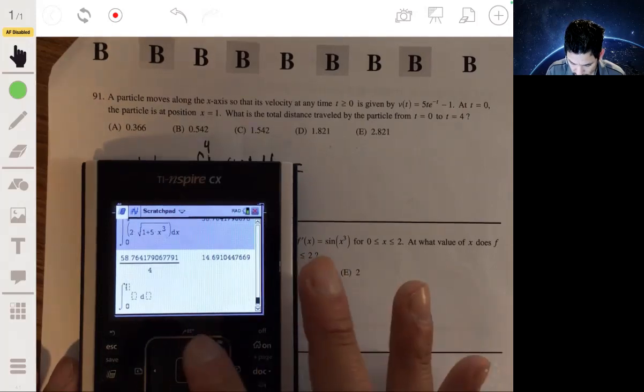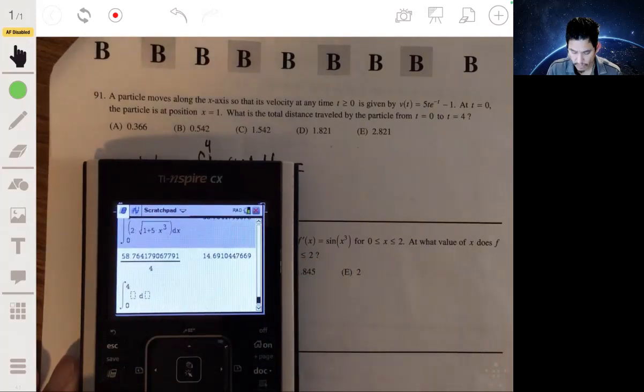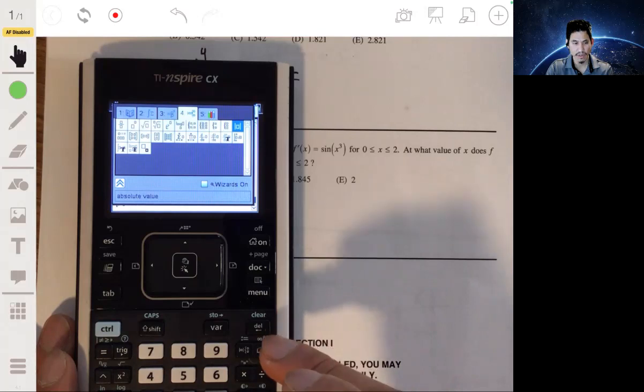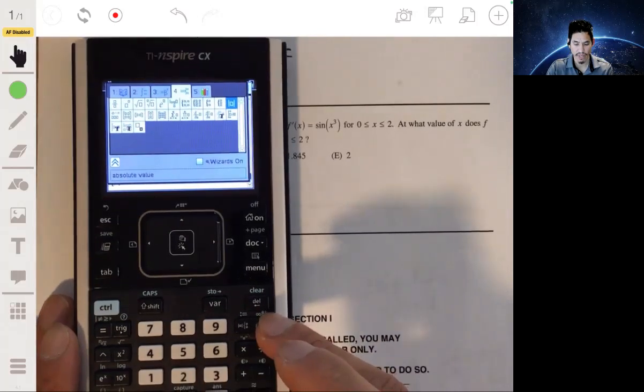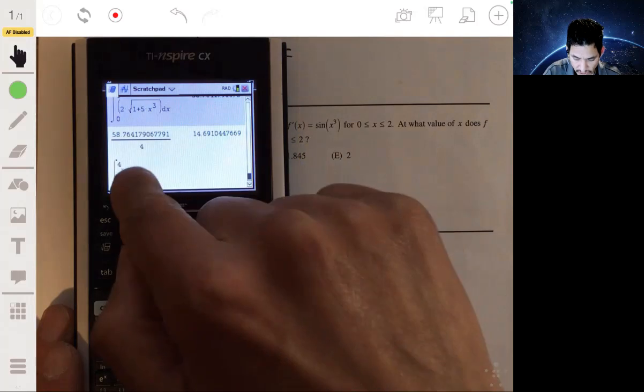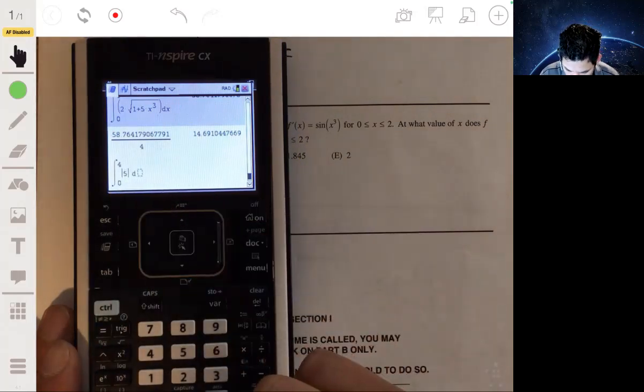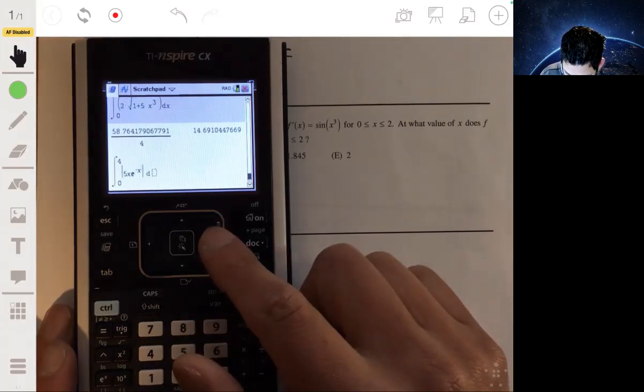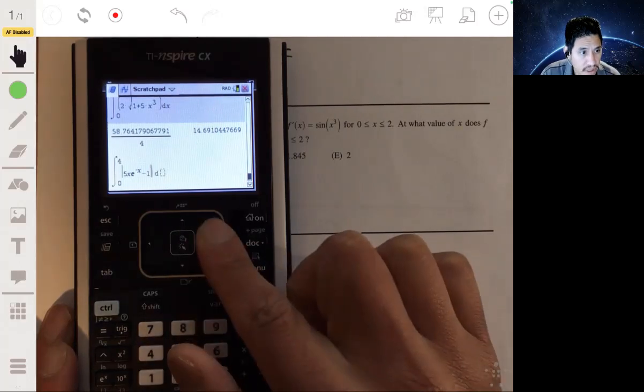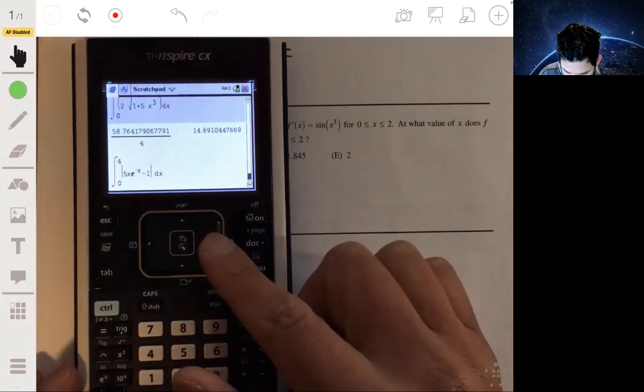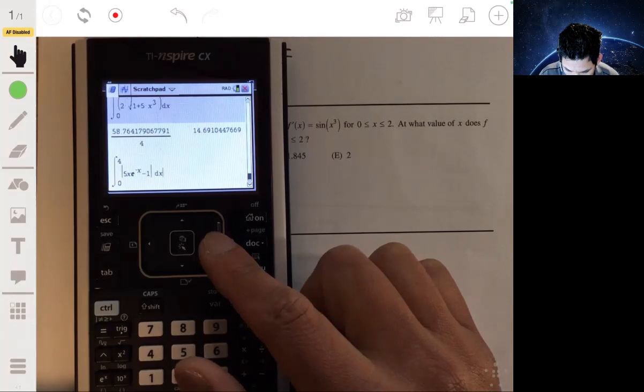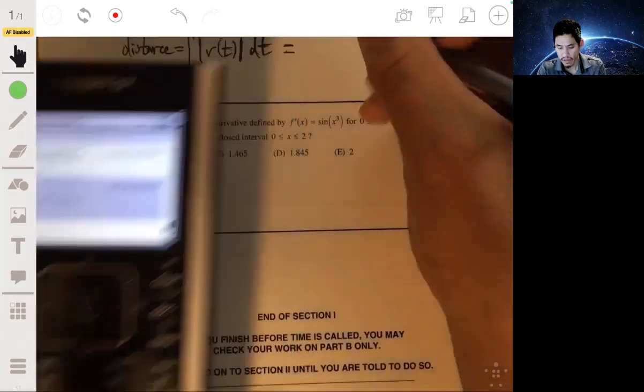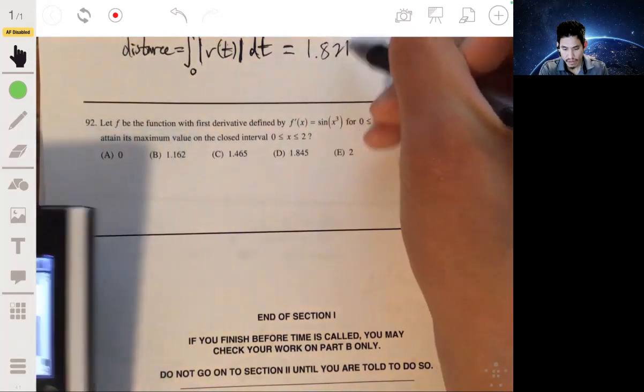So go 0 to 4, 0 to 4. And in this calculator, the absolute value sign is in this weird spot, the book, the Bible, the Bible of math right there. And then make sure you enter the velocity function in there. So 5 x e the negative x minus 1 dx and enter. And there we go. And that's your answer. So the answer is simply D.